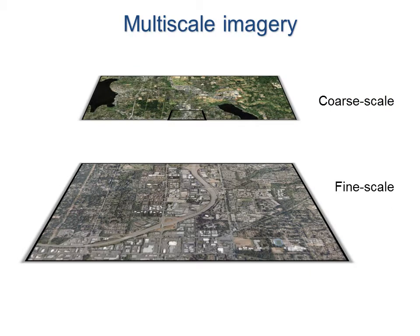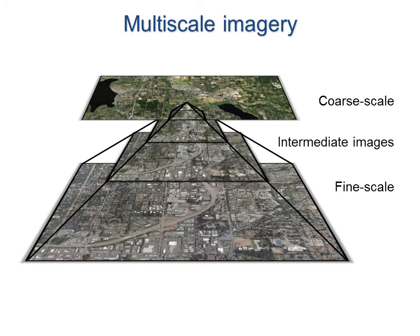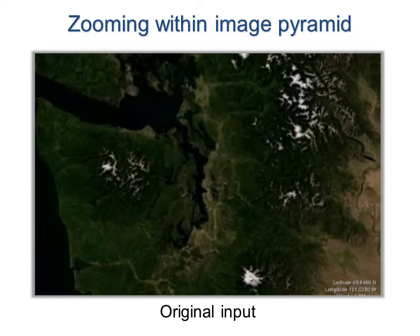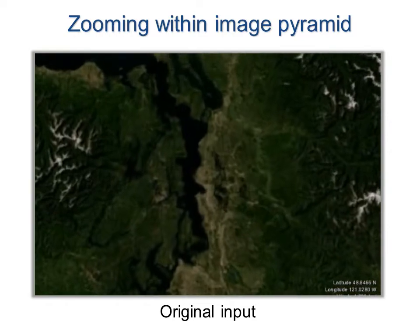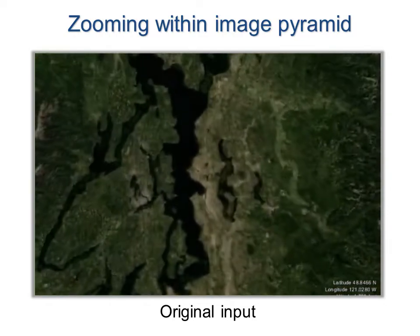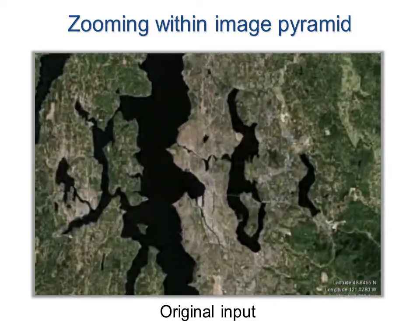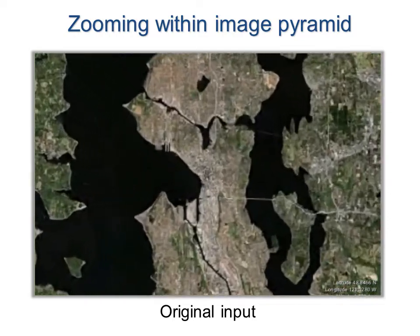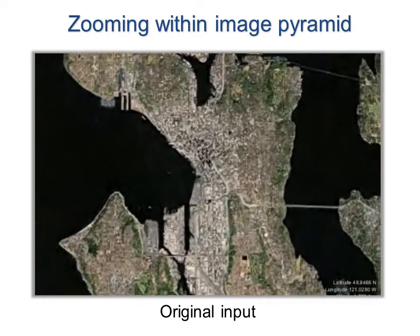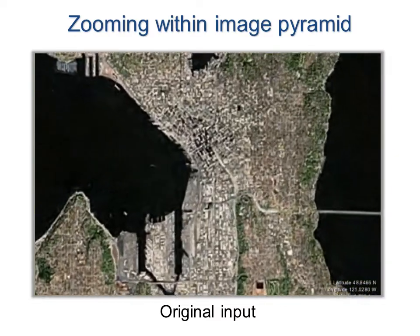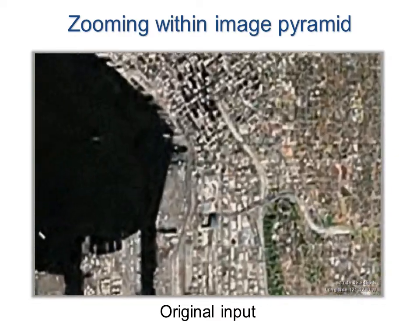Mapping applications often combine different sources of imagery at different scales, such as satellite and aerial photos. To create an image pyramid, new images must be defined at intermediate levels. Zooming within the pyramid can reveal jarring transitions, such as this change between two satellite images. The next transition, between satellite and aerial images, is even more abrupt because the appearance changes significantly.